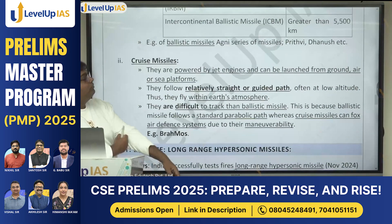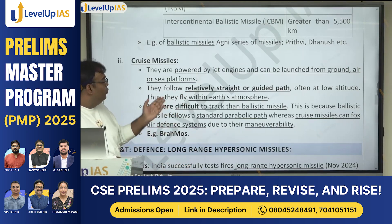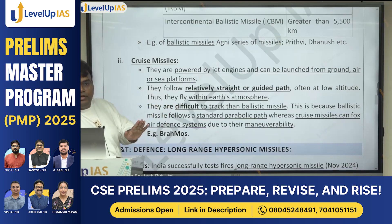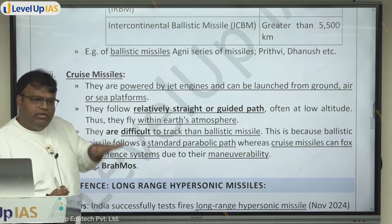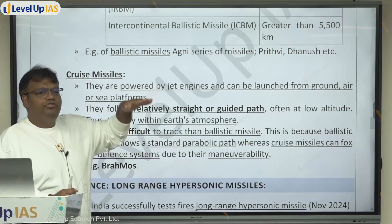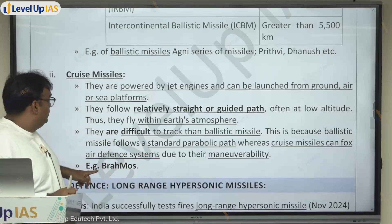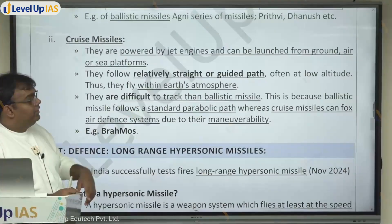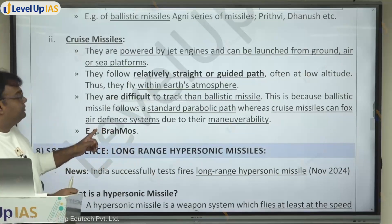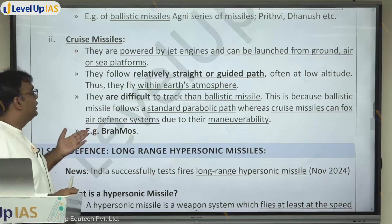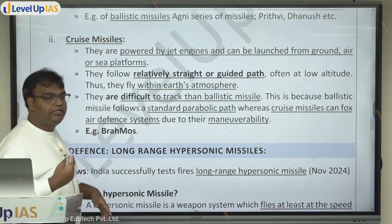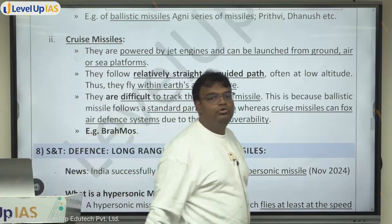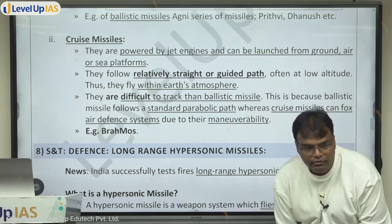Cruise missiles are powered by jet engines and can be launched from ground, air, and sea platforms. They follow a relatively straight or guided path, often at low altitude, so they fly within Earth's atmosphere. Unlike ballistic missiles, which can go above Earth's atmosphere, cruise missiles generally remain lower so that detection is difficult. They are difficult to track compared to ballistic missiles, because while ballistic missiles follow a standard parabolic path, cruise missiles can fox air defense systems due to their maneuverability. India's famous cruise missile is BrahMos, which is our cruise missile.